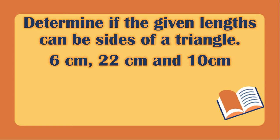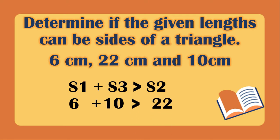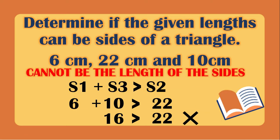Let's have the last combination. Side 1 plus side 3 should be greater than side 2. Side 1 is 6, plus side 3 is 10, it should be greater than side 2, which is 22. 6 plus 10 is 16, and 16 is not greater than 22. Meaning, these three measurements cannot be the sides of a triangle.